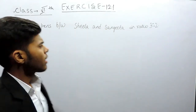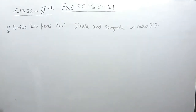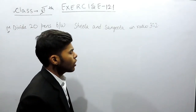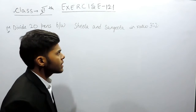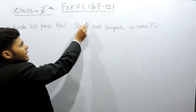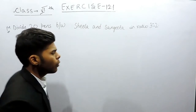Hello everyone. This is the 14th question of exercise 12.1 and the question says: divide 20 pens between Sheila and Sangeeta in the ratio 3:2. This means that if there are a total of 5 pens, Sheila will get 3 pens and Sangeeta will get 2 pens.